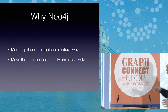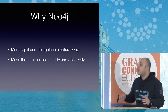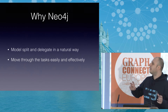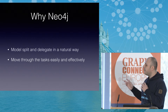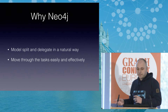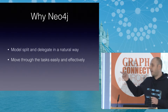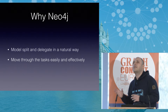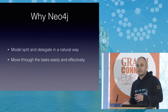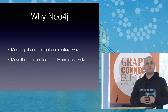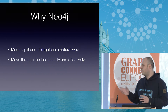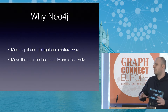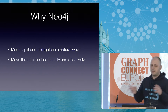So why did we choose Neo4j for this? I will show you that Neo4j is a really good fit for our requirements. We can model, split, and delegate actions in a natural way, and we can move through the tasks easily and effectively — that means fast. This project was implemented, I think it was five years ago, on a relational database. The database couldn't really support a good load of users. So we found another way and that was Neo4j.